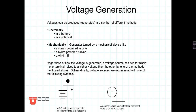Now, where do voltages come from? They're generated — we have to separate charge. It can be done chemically, as in a battery or solar cell, or mechanically by burning oil, gas, or natural gas, nuclear reactors, or solar-generated steam.